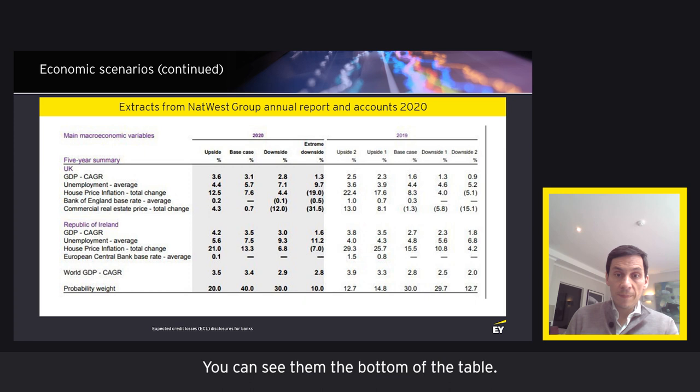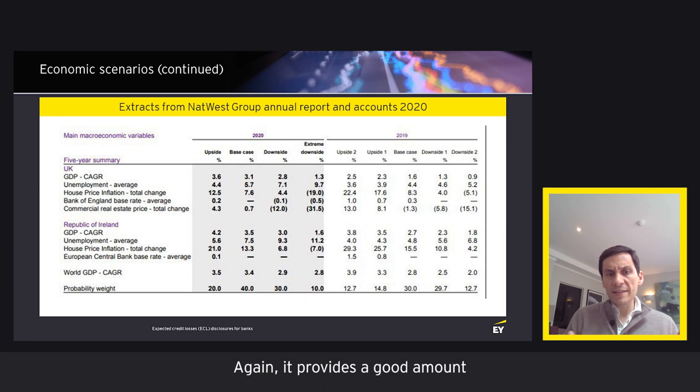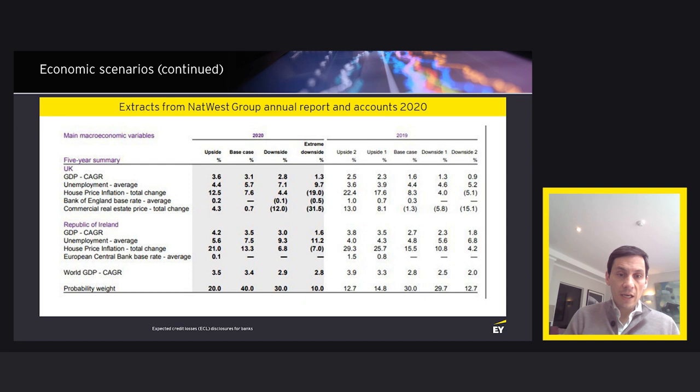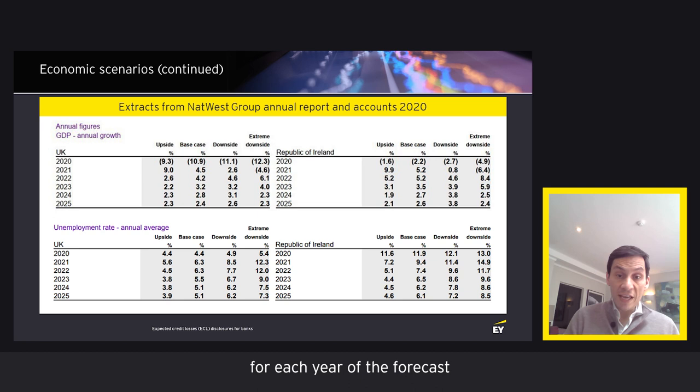If you want to drill down into more detail, you need to understand what's the value of the input for each year of the forecast period. That's why it's important to move to the next level, which is what NatWest provided in the next example — where you can see the value of inputs like GDP or unemployment for each year of the forecast period and for each scenario.